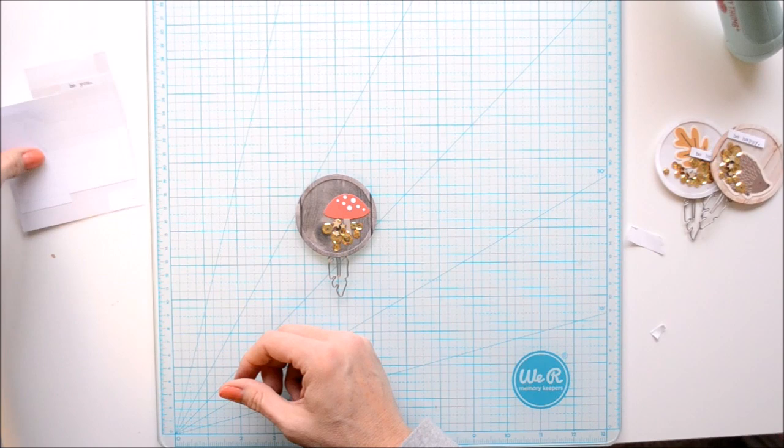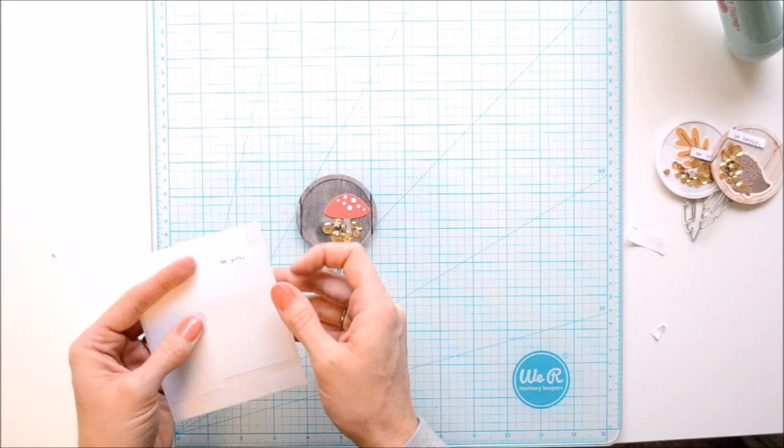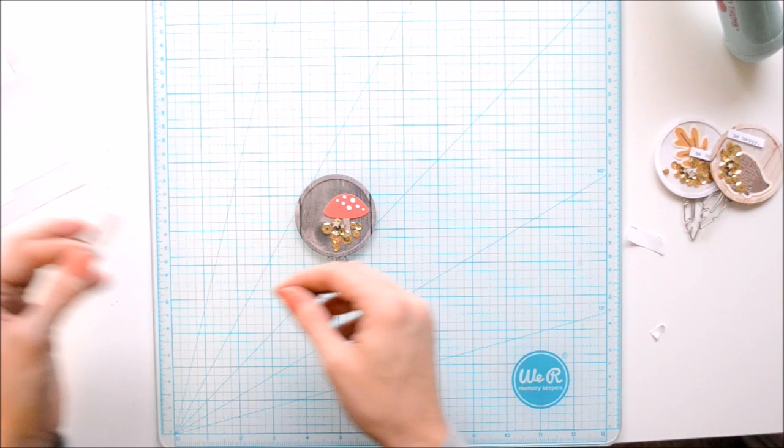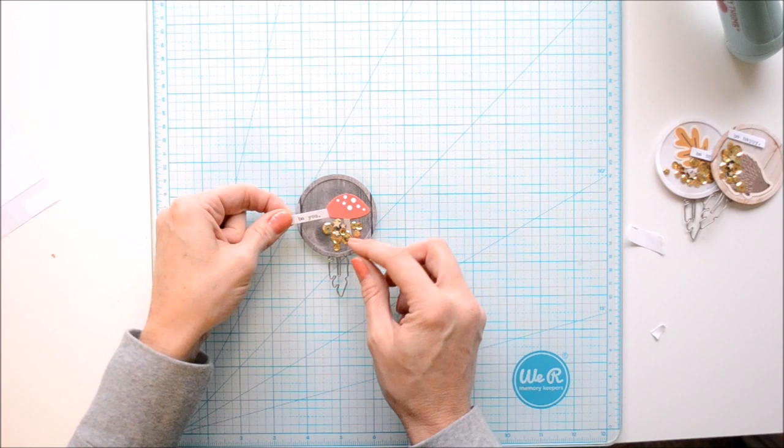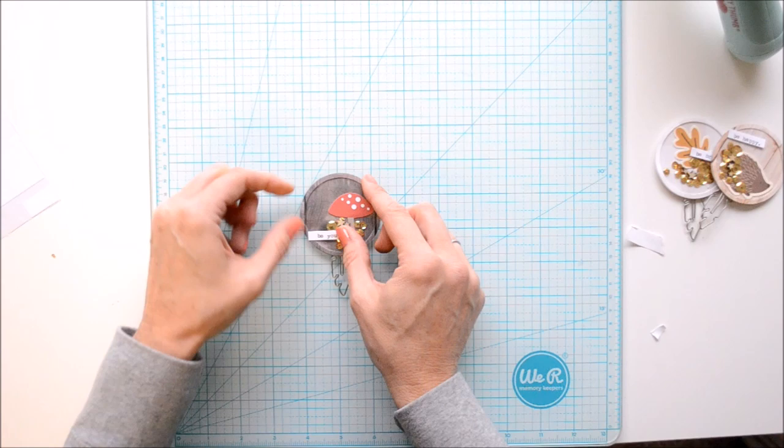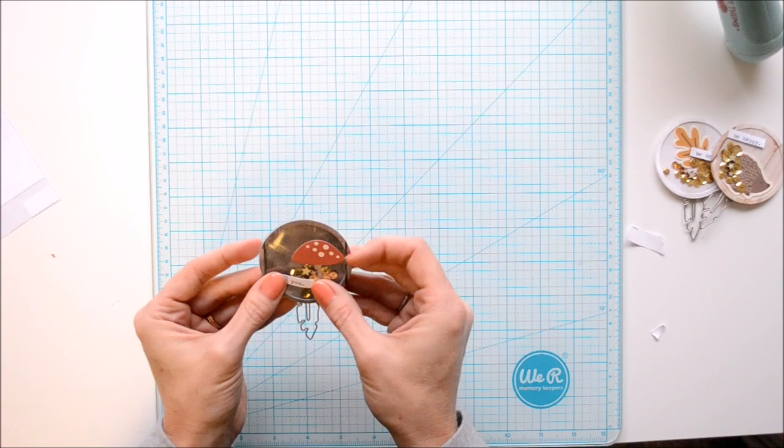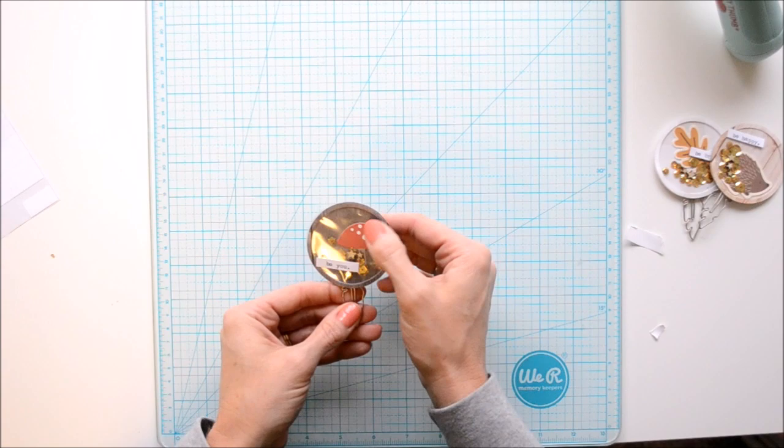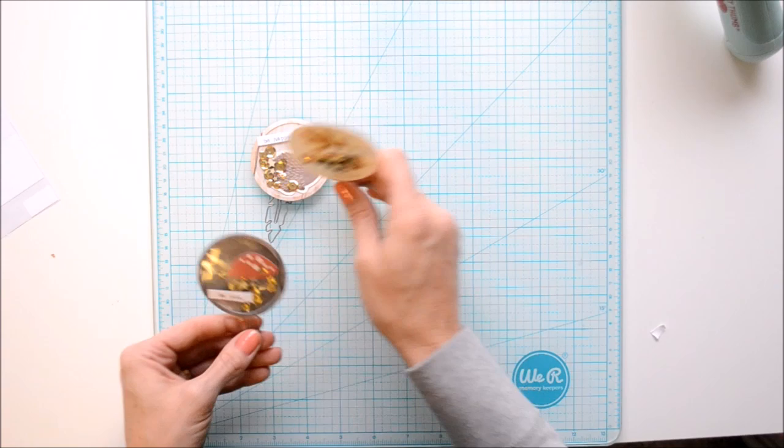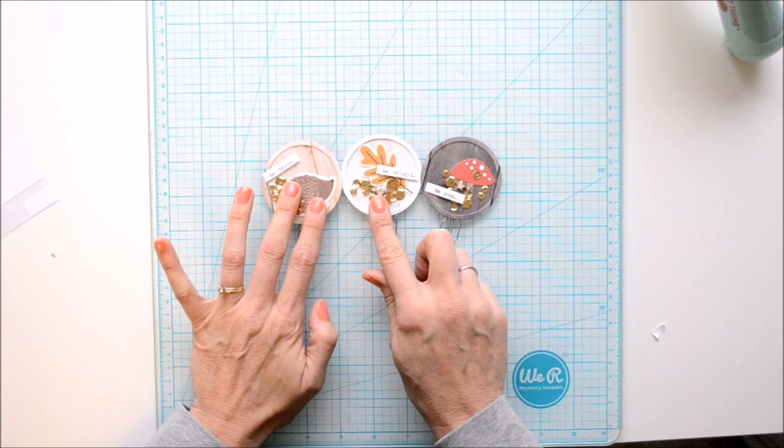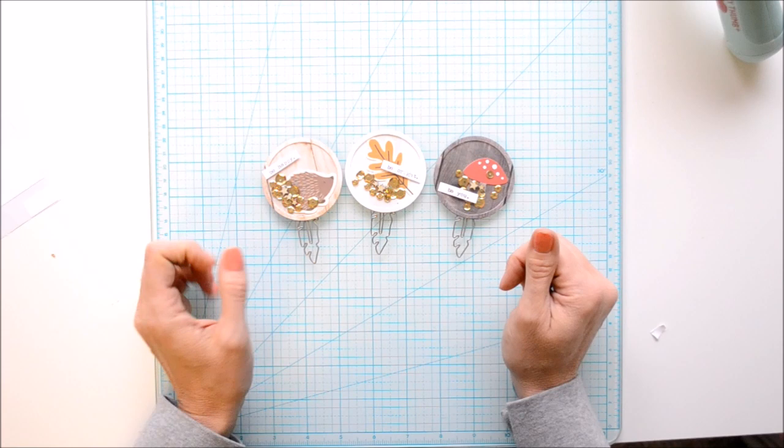Last thing we're going to do - I used my Typecast typewriter and these cute little labels that come with the Typecast collection to type some little phrases. This literally goes right through the typewriter which is so convenient, this is the easiest way to add sentiments or journaling. I've got my little shaker elements in there, my mushroom die cut. If we put the set together, this is what they end up saying: be happy, be bright, be you - cute little fall decorative paper clips, planner clips, bookmarks, whatever you want to use them for.